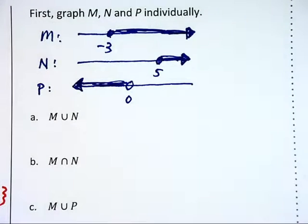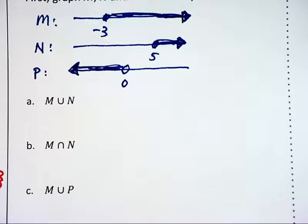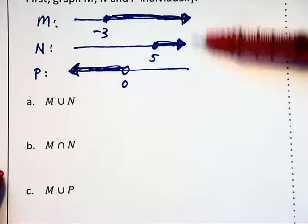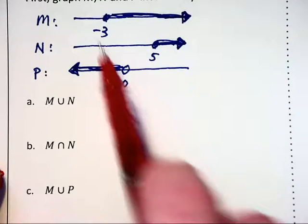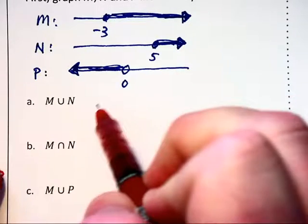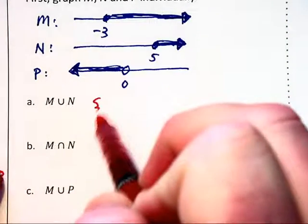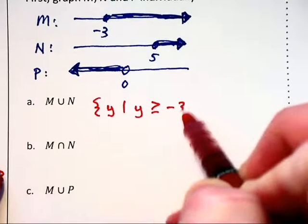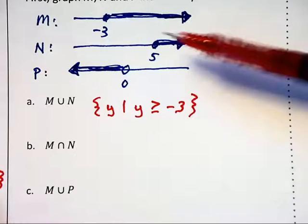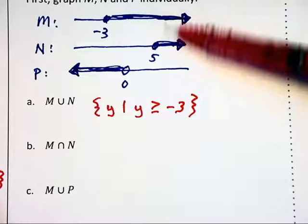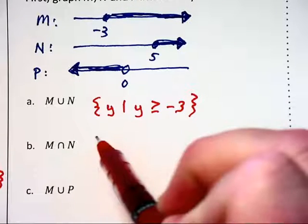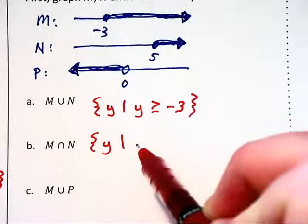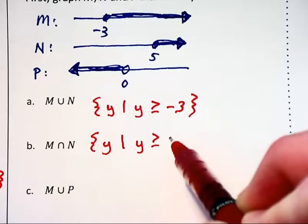Now we have three visual representations of these sets for which we can find the unions and intersections. In part A, the union of M and N becomes all values greater than or equal to negative three: the set of all Y such that Y ≥ −3. They intersect at five and to the right, so the intersection for part B is the set of all Y such that Y ≥ 5.